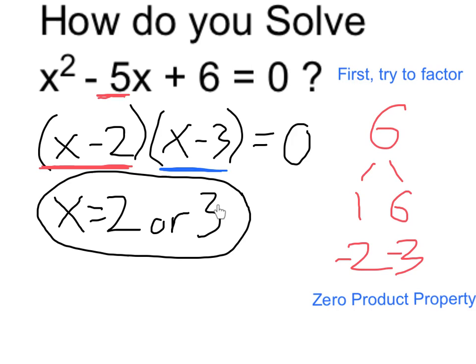So if I plugged in 3, I would also get an answer equal to 0. I did that by factoring, then using my zero product property. Hope that helps. Thank you.